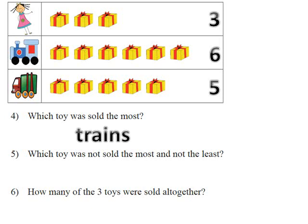Which toy was not sold the most and not the least? We said 'most' means the biggest, so which number is the biggest? It's 6. What does 'least' mean? It means the smallest. That means 3 is the smallest answer. So what number didn't we use? The number 5. Therefore, my answer is going to be trucks.